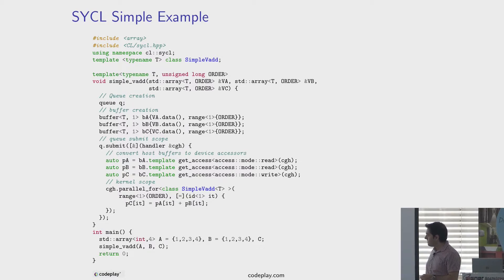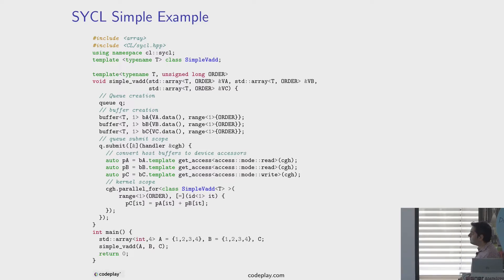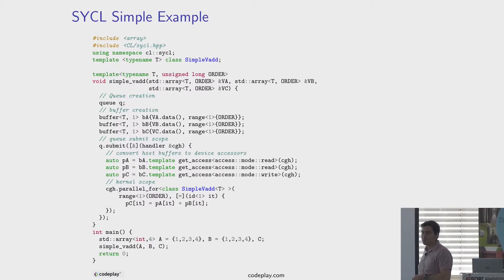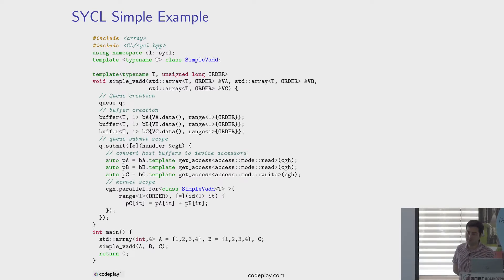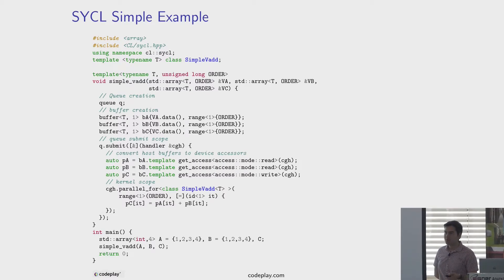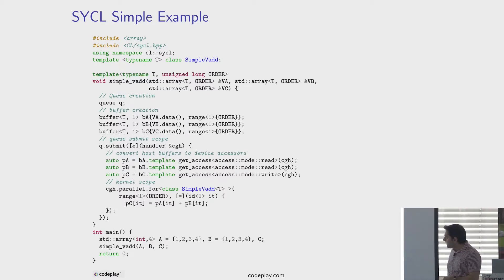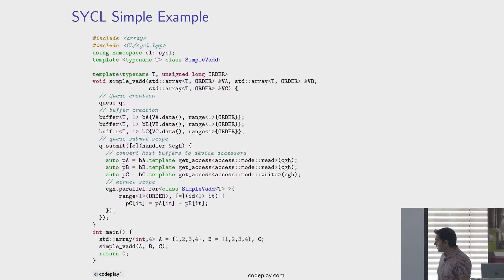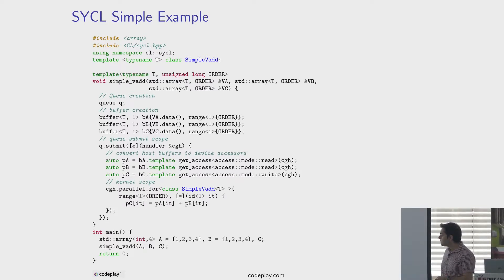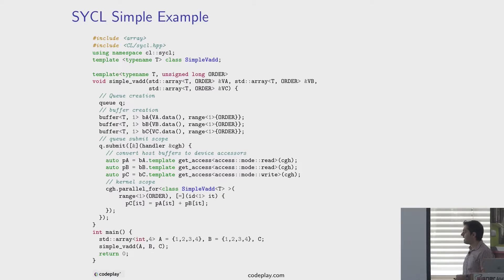The next scope is the kernel scope — anything written inside that part of the lambda runs on the GPU. You write any C++11 lambda expression, but it is restricted C++11. For example, you cannot have global variables or virtual functions, as those are not supported by the GPU. You write your kernel here using these accessors, which behave pretty much like arrays.